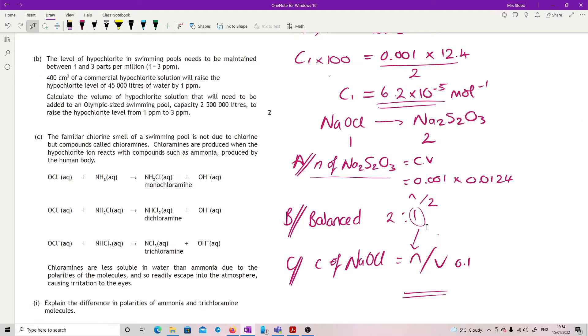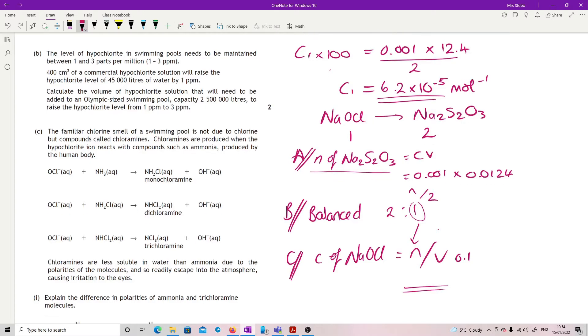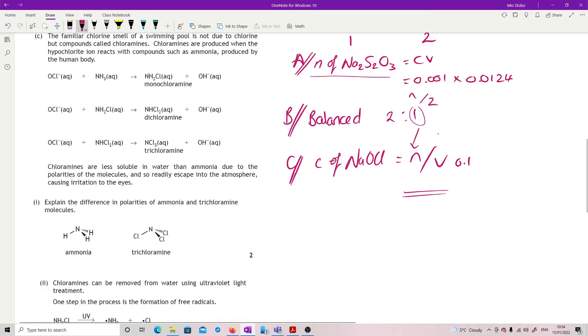The level of hypochlorite in a swimming pool needs to be maintained between 1 and 3 parts per million. 400 centimeters cubed of a commercial hypochlorite solution will raise the hypochlorite level of 45,000 liters of water by 1 part per million. Calculate the volume of hypochlorite solution that we've needed to add to an Olympic swimming pool sized pool. Capacity of 2,500,000 liters to raise the hypochlorite level from 1 part per million to 3 parts per million. This one, again, don't think is too bad, although the numbers are not lovely. So what we have is, I'm just spinning down so I've got space on this one, we have your original, kind of this is how much we'd be treated by 400 centimeters cubed.